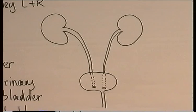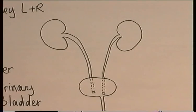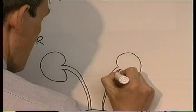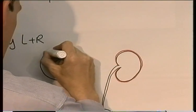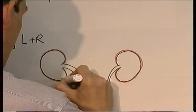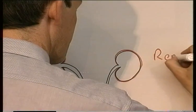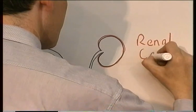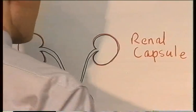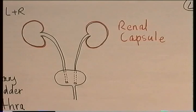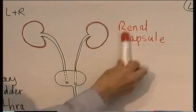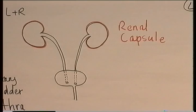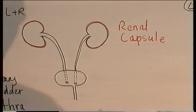Round about each kidney there's a fibrous capsule that helps to protect the kidney. All around the kidney there's also fatty material that provides further protection. The kidney itself can be looked at as having three layers.